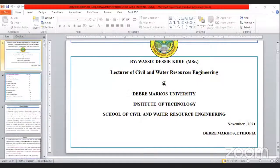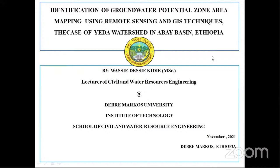Thank you. A warm welcome to all. Welcome to Research Circle. I hope I am audible to all. Welcome for today's webinar. We are going to conduct a webinar on the topic: identification of groundwater potential zone mapping using GIS and remote sensing in the case of Yeda watershed, Abbai Basin, Ethiopia.